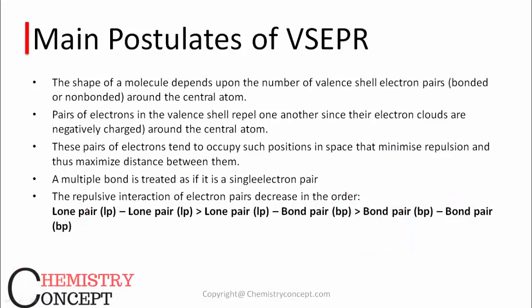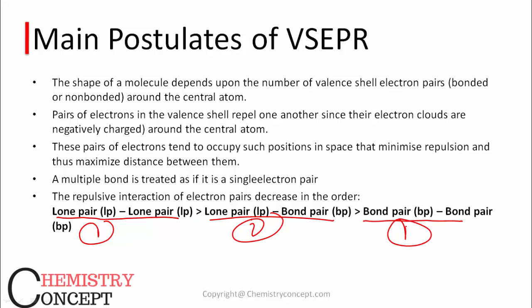When we talk about repulsions, lone pairs are those electrons not being used for forming a bond, and bond pairs are those which are forming a bond. They repel one another but not equally. Lone pair–lone pair repulsion is very strong. After that comes lone pair–bond pair repulsion. Then comes bond pair–bond pair repulsion. So there are three types: LP–LP is strongest, LP–BP is next, and BP–BP is weakest.